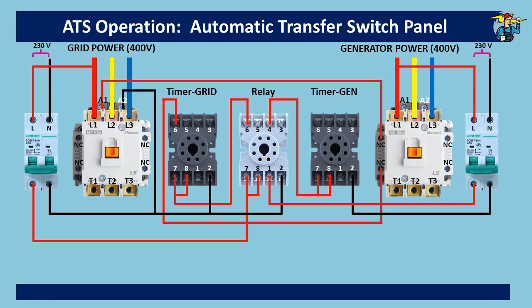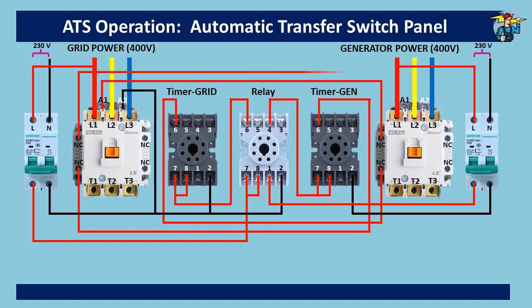Power from port 7 is connected to common port 8 of the generator timer. The generator timer outlet port 6 is normally open but closes and connects with inlet port 8 after the set time delay. Port 6 of the generator timer is then connected to A1 of the generator contactor, also going through the normally closed auxiliary contact of the grid power contactor for interlocking safety. Neutral wire connects to A2 of the generator contactor to complete the generator side control circuit.